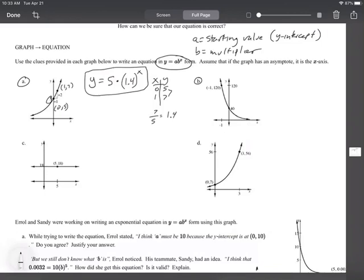So, Y equals AB to X. We see that the Y intercept is 40, so we know it's going to be 40 times. And then B, the one thing you want to be careful on is just to make sure that there's only one unit between them in the X direction. That looks to be true here. So, we have negative 1, 120, and 0, 40. And so, the ratio here is going to be 40 over 120, which is 1 over 3. So, that means that each point is one-third of the one before. So, we have one-third to the X power.